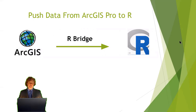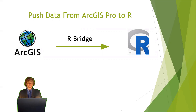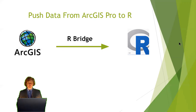Now that we have what we need in ArcGIS Pro, we need to transfer our data from ArcGIS Pro to R. This is usually a big obstacle when working with two different softwares. But fortunately, there is a tool in ArcGIS Pro and a matching library in R — both called R-Bridge — that makes this process very easy. In fact, there is a dynamic link between ArcGIS and R that makes working with both softwares dynamically at the same time very easy.